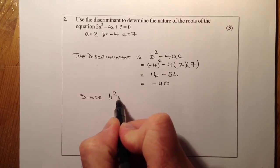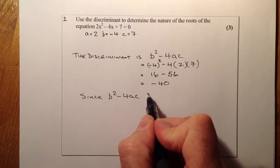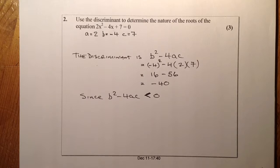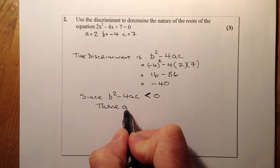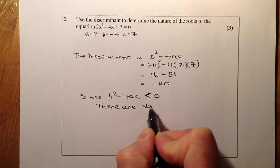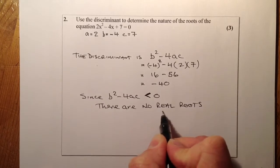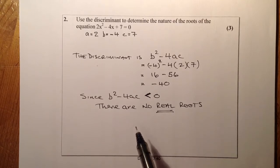So since b squared minus 4ac, I know it's minus 40, but that would tell me it's less than 0. So minus 40, negative numbers being less than 0, I'll say that there are no real roots. Make sure you state the word real. That's an important one. Without that, if you state that there are no roots, you will not get the mark for that question. You need to make sure that you state it all.